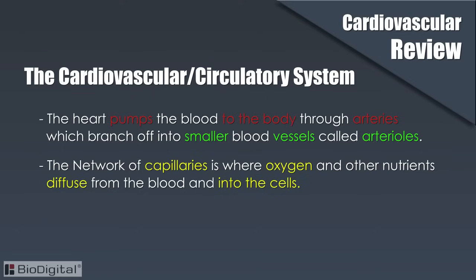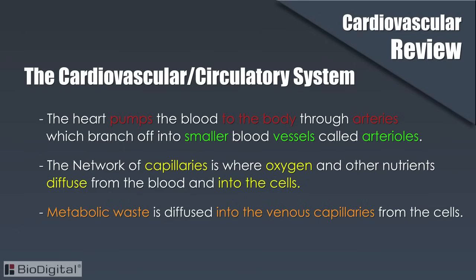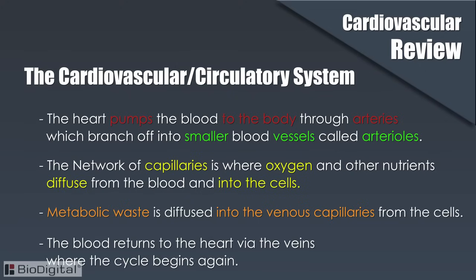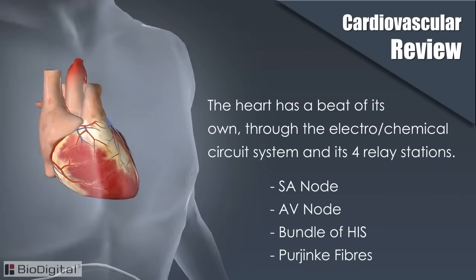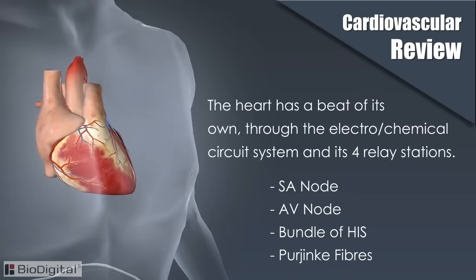The network of capillaries is where oxygen and other nutrients diffuse from the blood into the cells. As oxygen and nutrients are diffused into the cells from the arterial capillaries, metabolic waste is diffused into the venous capillaries from the cells. The blood returns to the heart via the veins, where the cycle begins again. Remember that the heart has a beat of its own through the electrochemical circuit system and its four relay stations.